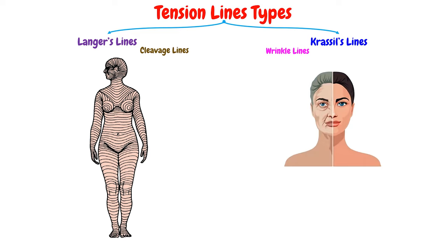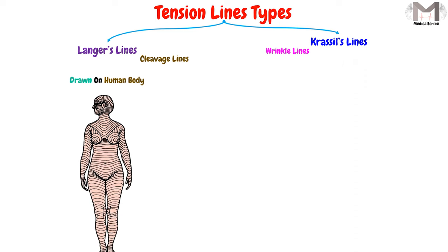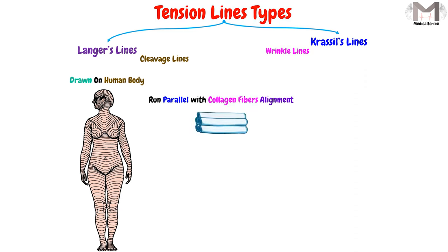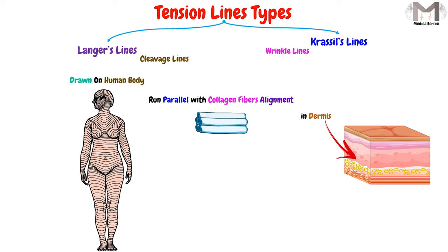We will begin by the Langer's lines. This type of lines that drawn on the human body will run in parallel with and correspond to the collagen fibers alignment that is found in the dermis. And usually, these lines will be in the same direction of the underlying muscle fibers.